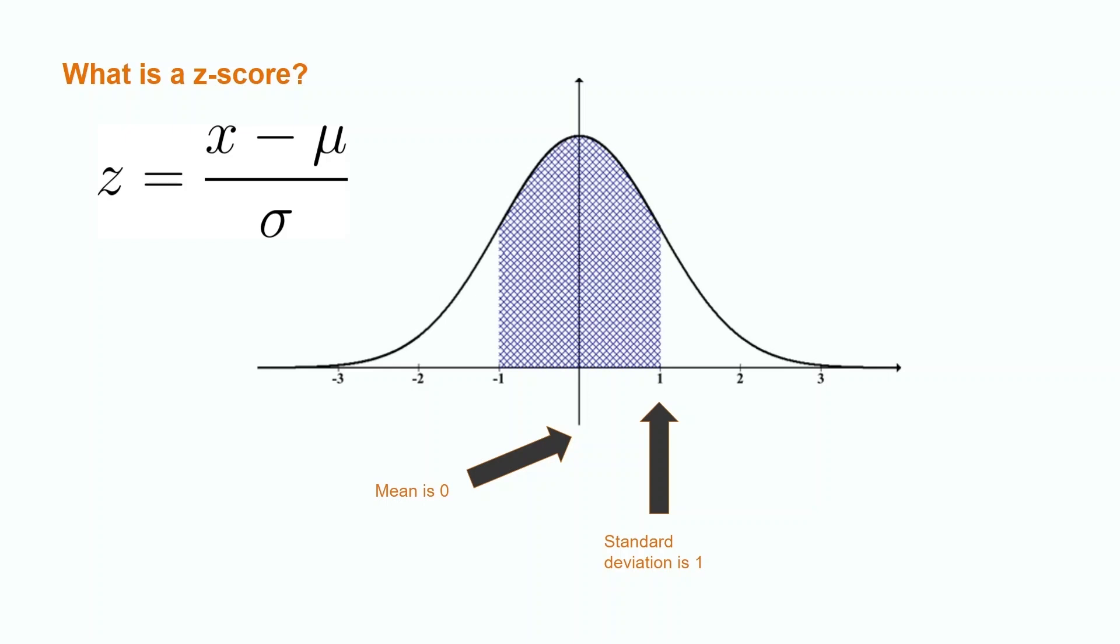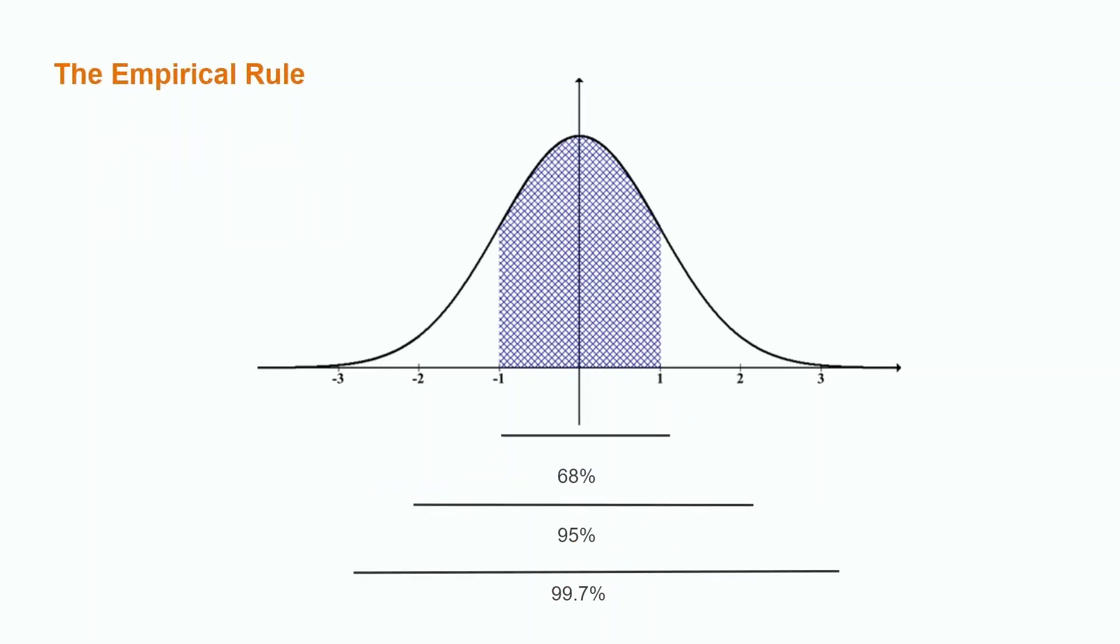A z-score is computed by subtracting our observed value from the mean and dividing it by the standard deviation. The farther a z-score is from 0, the less common the value is. Once we know the z-score of a data point, we can use the empirical rule.